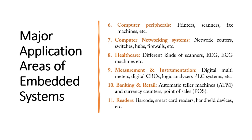Coming to measurement and instrumentation — this will be more familiar to you because you might have used a digital multimeter, digital cathode ray oscilloscope (CRO), logic analyzers, and PLC systems in your laboratory. These systems are specific in function: a 30V, 2A DC power supply will give you a maximum of 30 volts and 2 amps current — a specific function, hence an embedded system. Similarly, a CRO has a specific function of displaying signals.